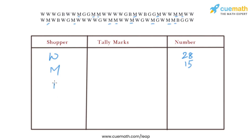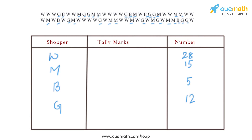Now let's count the boys: 1, 2, 3, 4, and one more makes 5. So there are 5 boys. Now let's count the girls: 1, 2, 3, 4, 5, 6, 7, 8, 9, 10, 11, 12. So there are 12 girls.